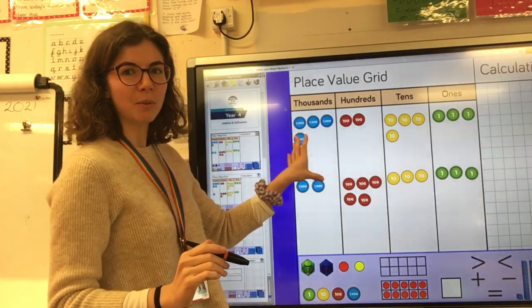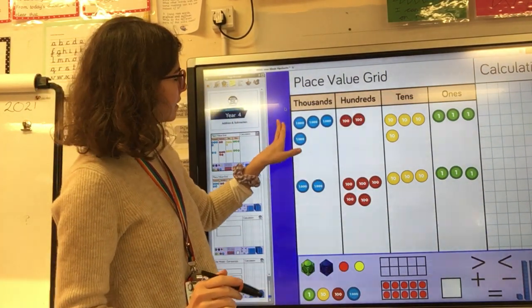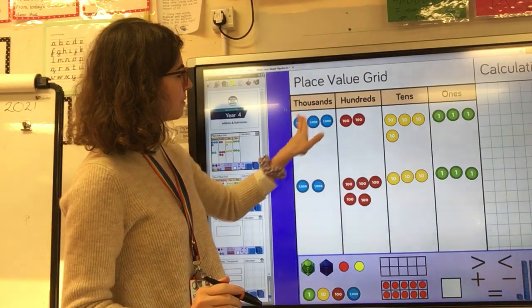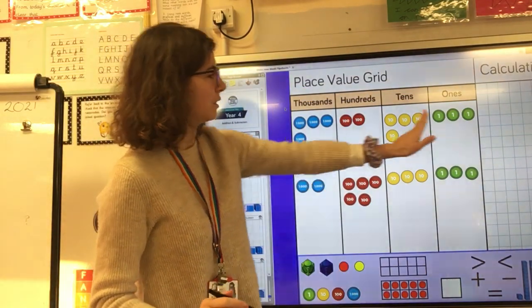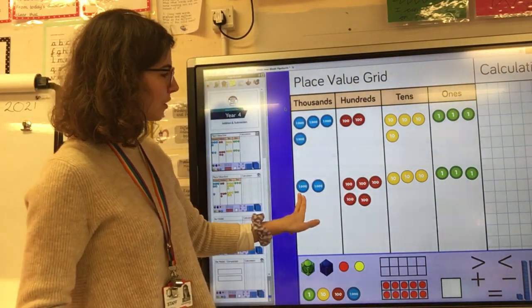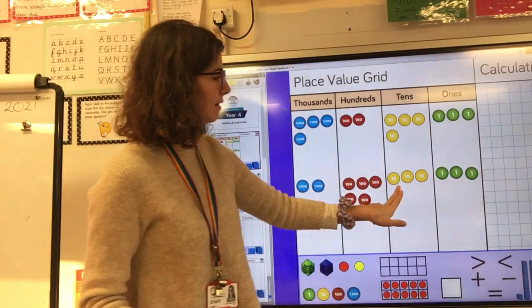Let's look and see which numbers we're adding together first. I can see that I've got 4,243 add 2,533.